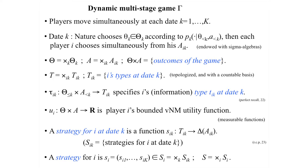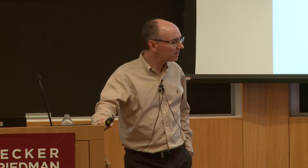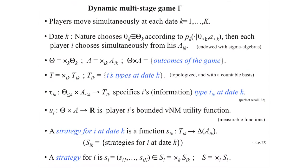An outcome of the game: capital Theta is the set of sequences of nature's choices at each date. Capital A is the sequence of profiles of date-K action choices of all players. So an outcome is a choice by nature at all dates and by the players at all dates — capital Theta cross A is the set of outcomes.